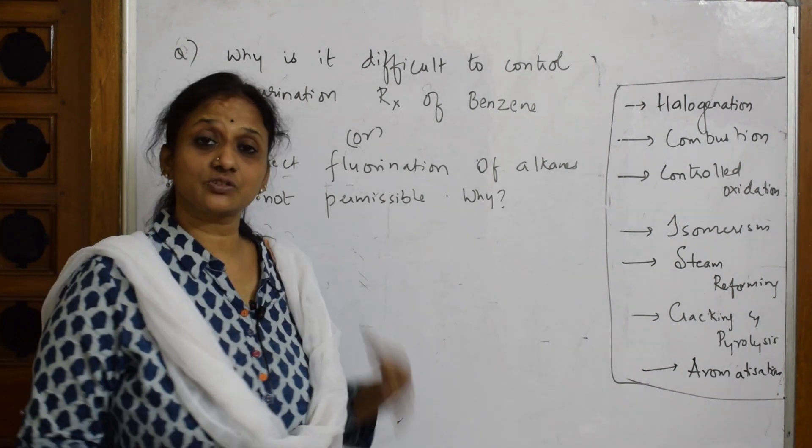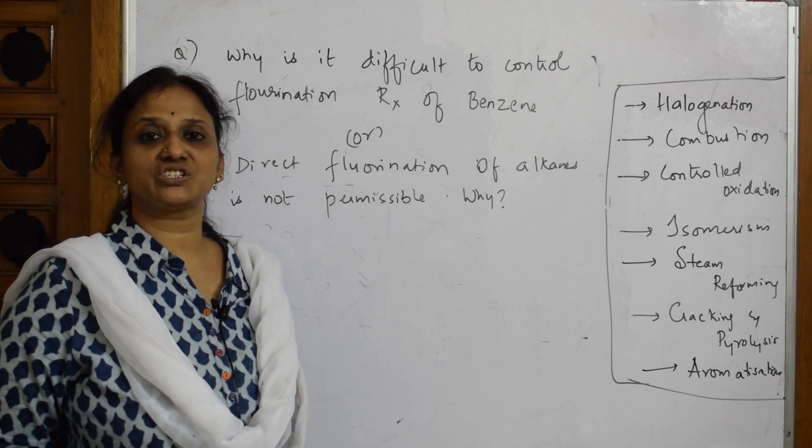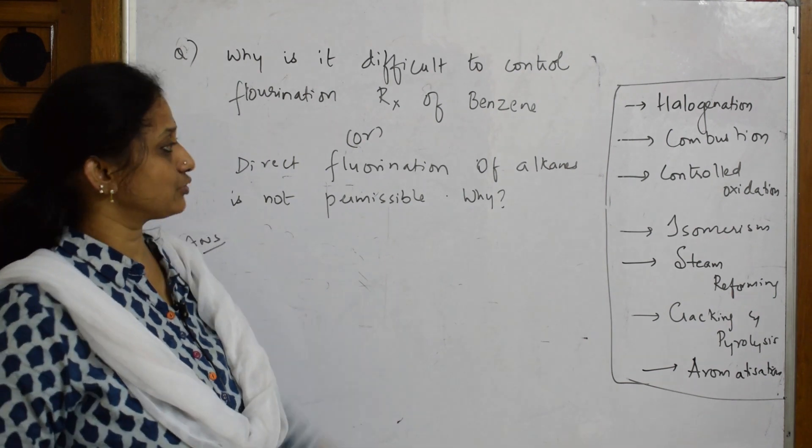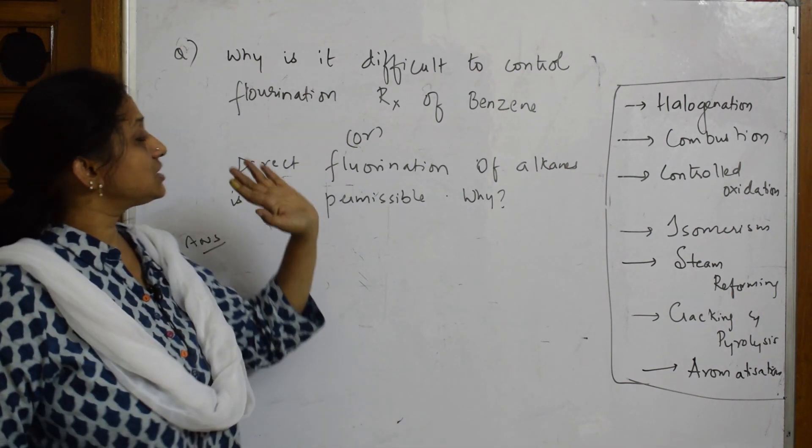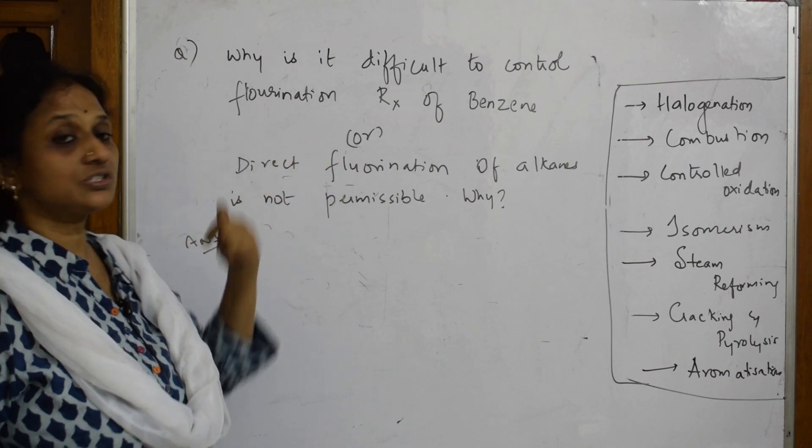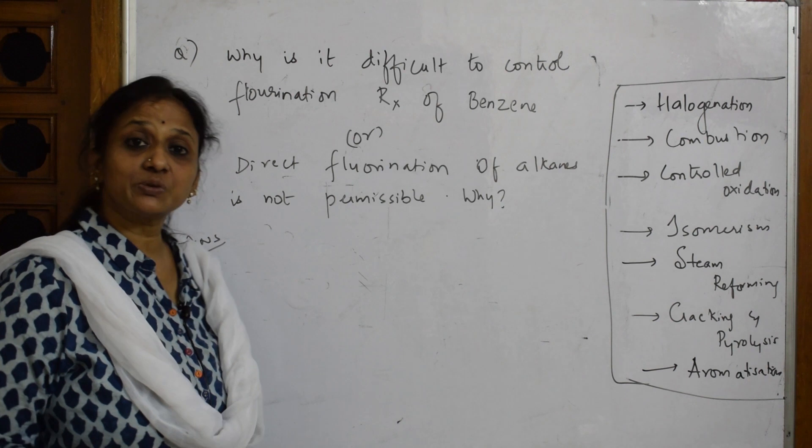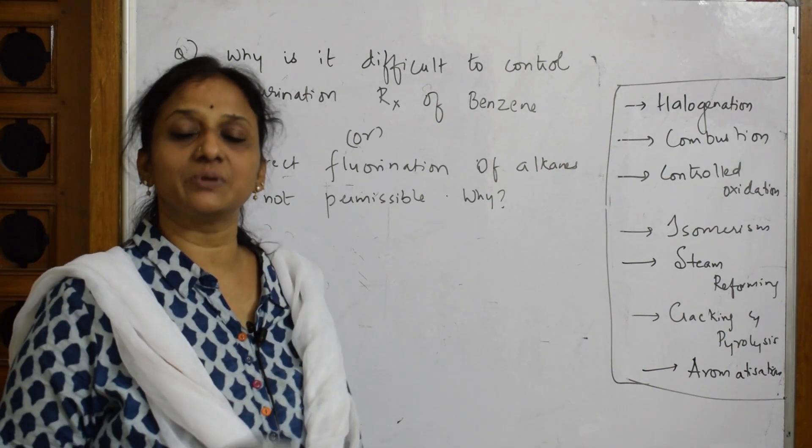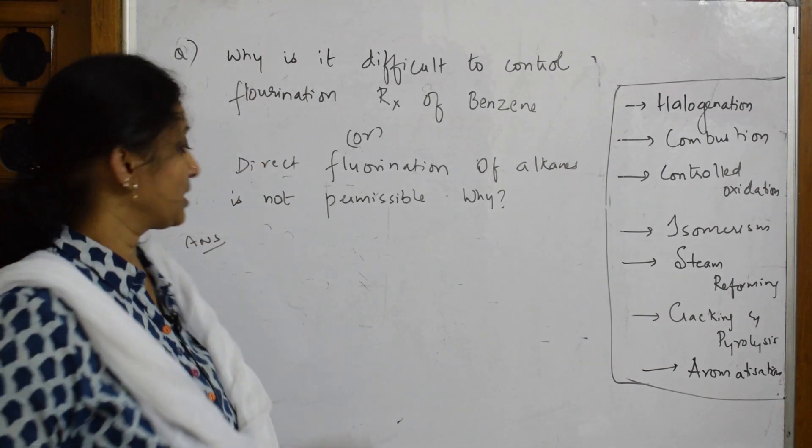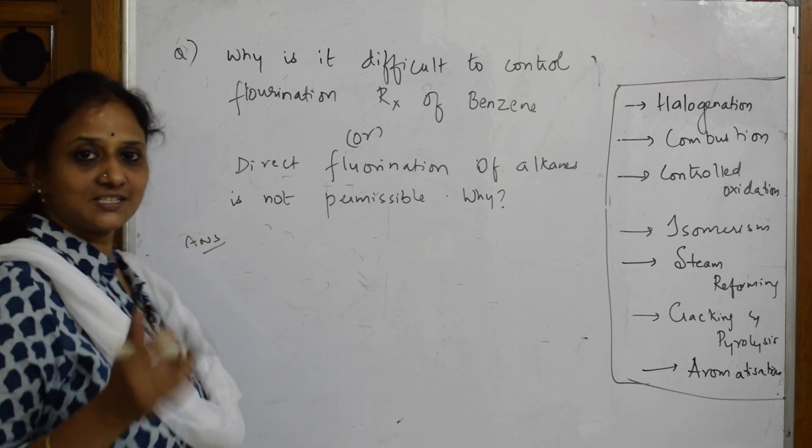Now let's see fluorination. We have seen chlorination, bromination, and iodination. Let's see fluorination. Question: Why is it difficult to control fluorination reaction of benzene? Or direct fluorination of alkane is not permissible. Why is it not permitted or allowed?